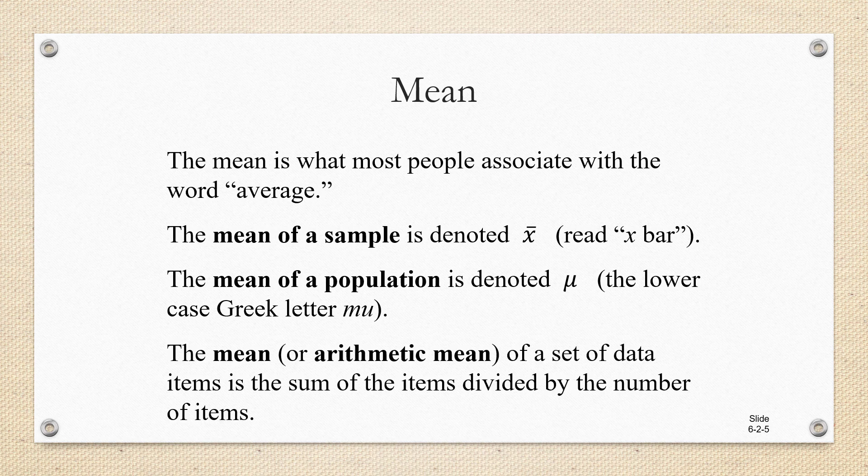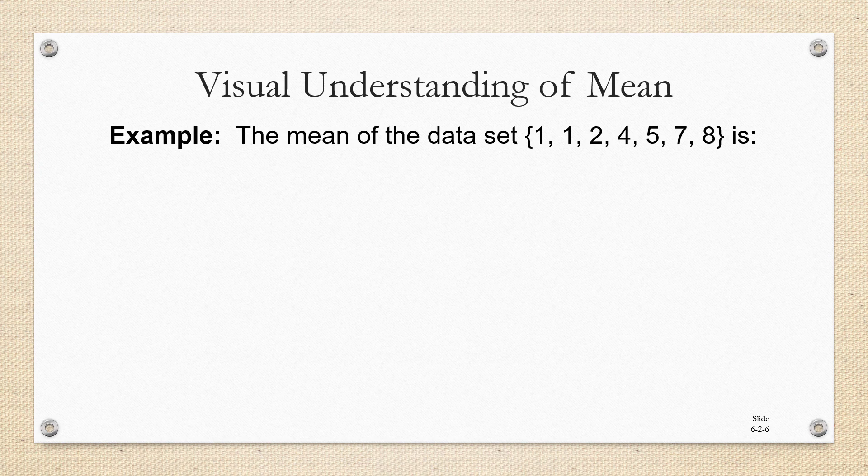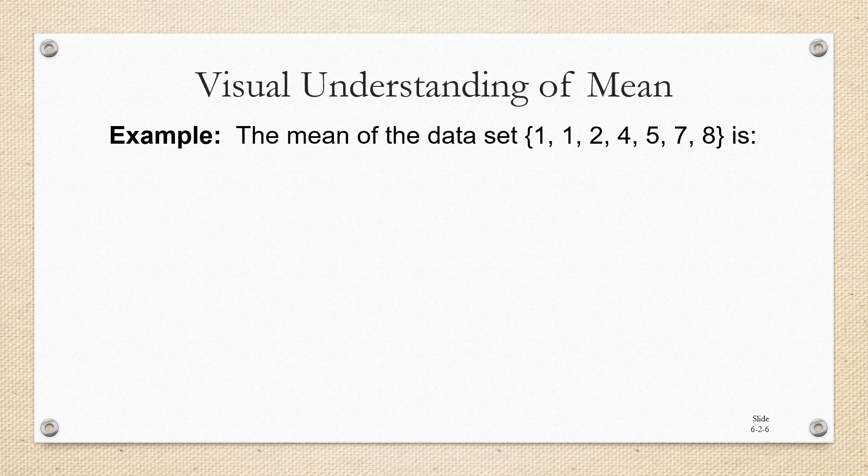The mean, also called arithmetic mean, of a data set is the sum of the items in the set divided by the number of items. It might not be intuitive as to why adding up a bunch of numbers and dividing by the number of numbers is going to give you a typical value for a data set. So let's take a look at a visual representation of what's happening.